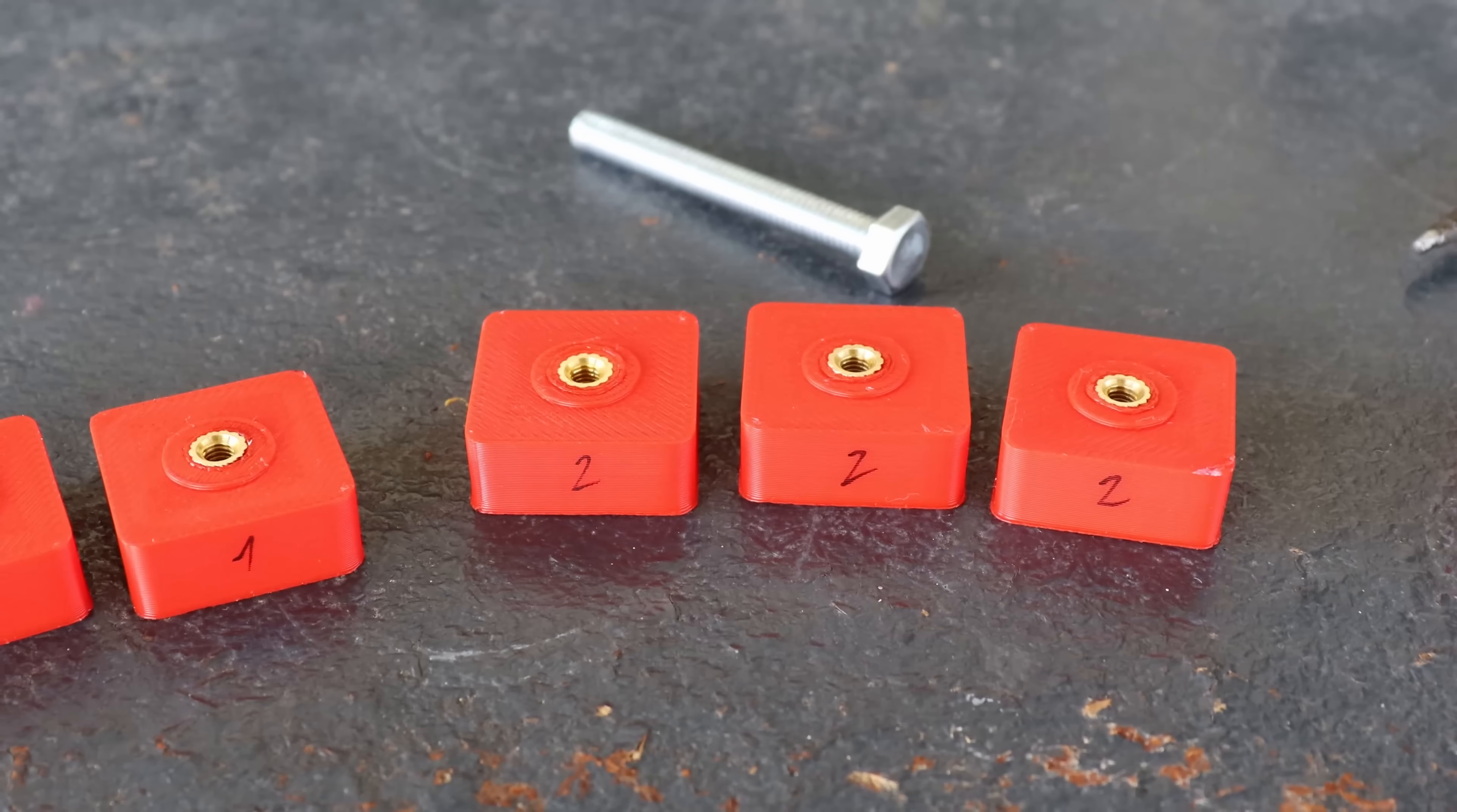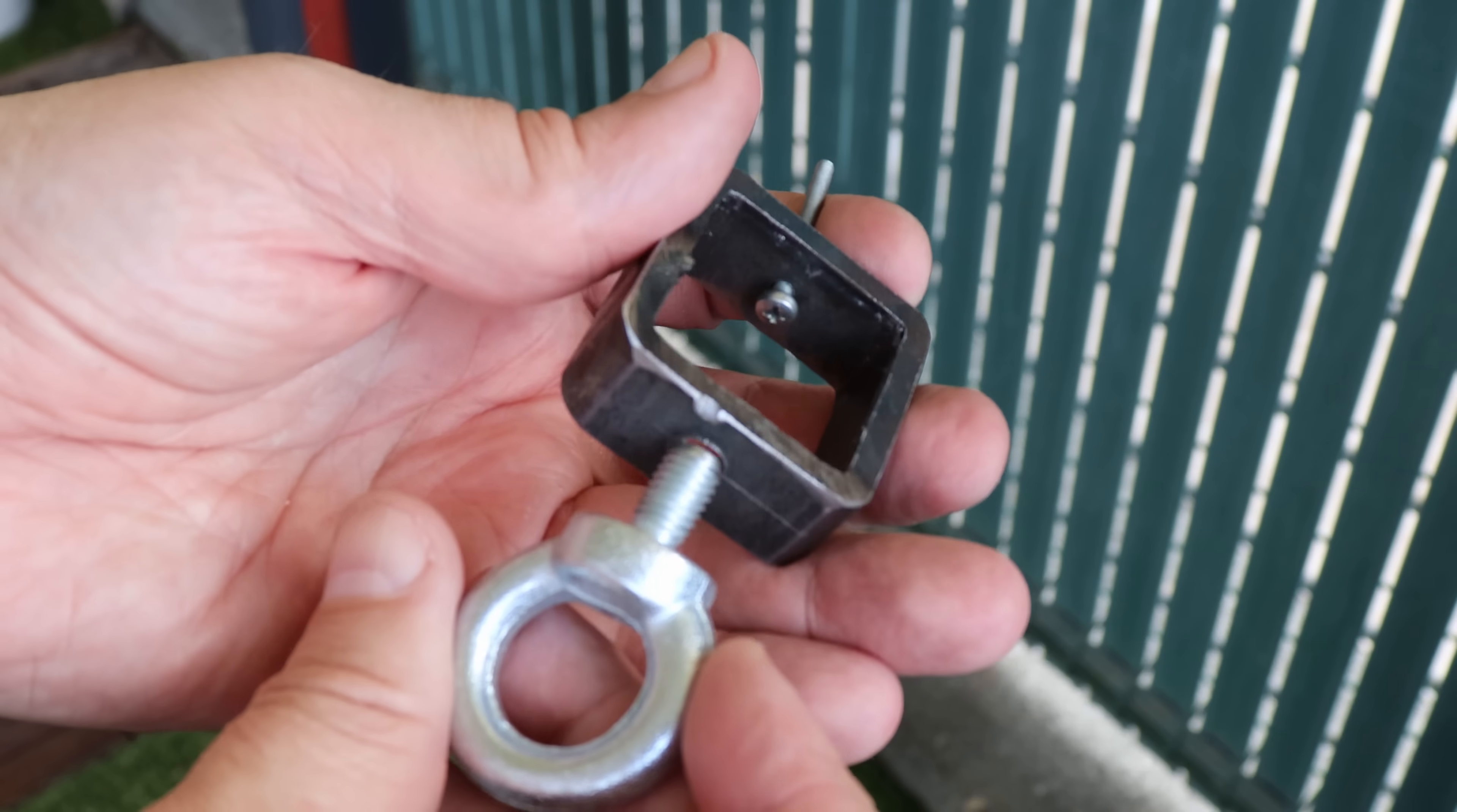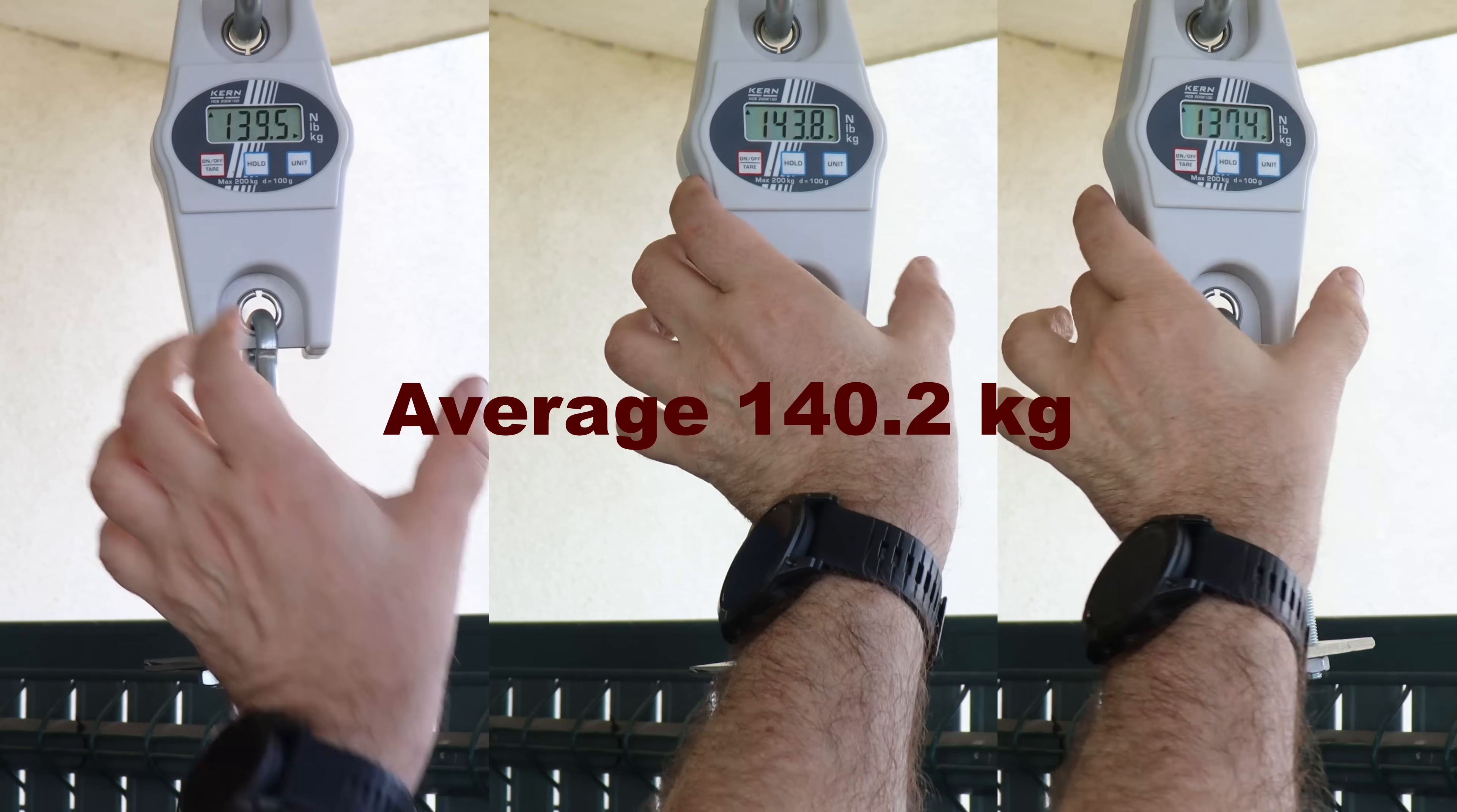I started with testing using this M3 eye bolt. And as you can see, it deforms at approximately 30-35 kilograms. So not really good for my application. Completely deformed. So I made a stronger connection. I hope this will be strong enough. And here you can see me in action. And what size of the load I have to pull. The average here is 140 kilograms.